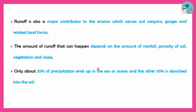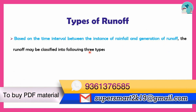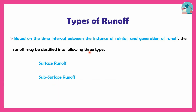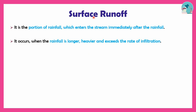So, 35% of precipitation ends in the sea or ocean. The amount of runoff increases when rainfall is larger and heavier.